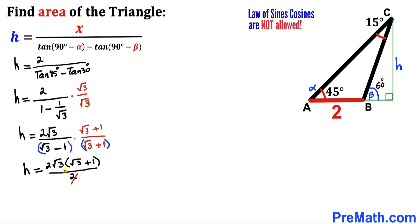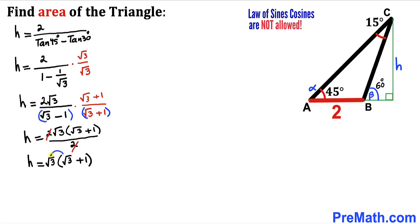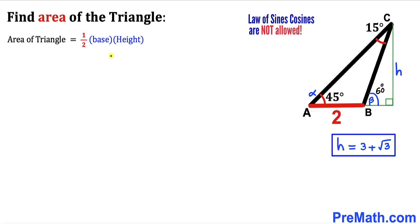The 2s cancel out, so height H equals square root of 3 times (square root of 3 plus 1). Distributing square root of 3 gives H equals 3 plus square root of 3.